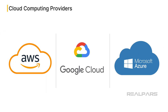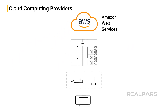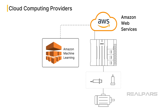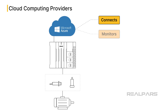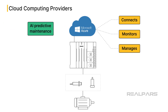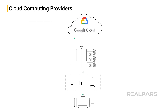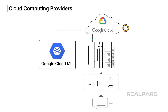Let's discuss third-party cloud computing providers and the services they provide for Industry 4.0. Keep in mind that these services are not free. Amazon Web Services, or AWS, provides secure connections and interaction between industrial devices and cloud applications, and offers machine learning services for predictive maintenance and production optimization. Microsoft Azure connects, monitors, and manages industrial IoT devices, and like AWS, supports AI-driven predictive maintenance and production process improvements. Google Cloud offers data collection services and real-time analysis, as well as AI and machine learning models for predictive analytics and automation.